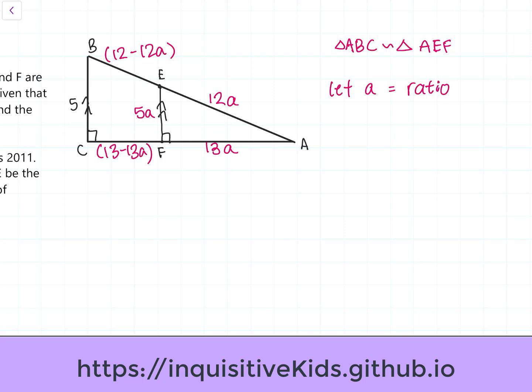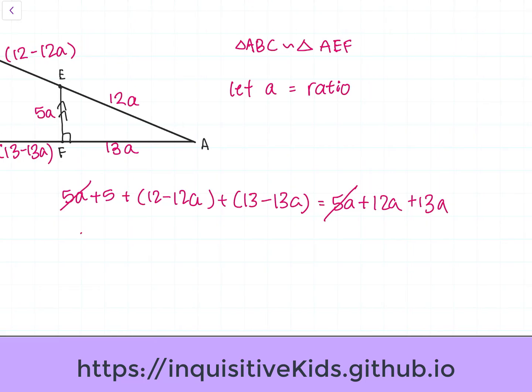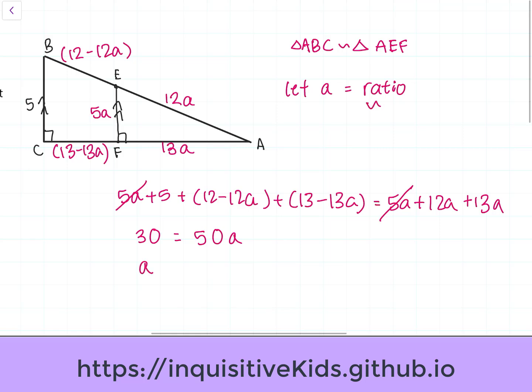Where's the equivalent relationship that we can get from this problem? Well, because we know that they have the same perimeters, we could write 5A plus 5 plus 12 minus 12A plus 13 minus 13A is equal to 5A plus 12A plus 13A. Now we can subtract this on both sides. And after some extra calculations, we have 30 is equal to 50A. So, now we can find the ratio of the scaling. The ratio becomes 3 over 5.